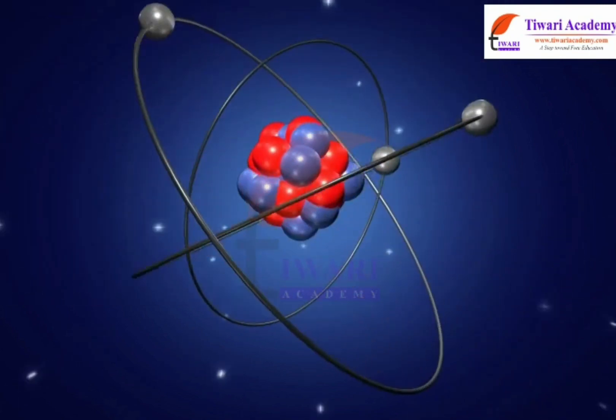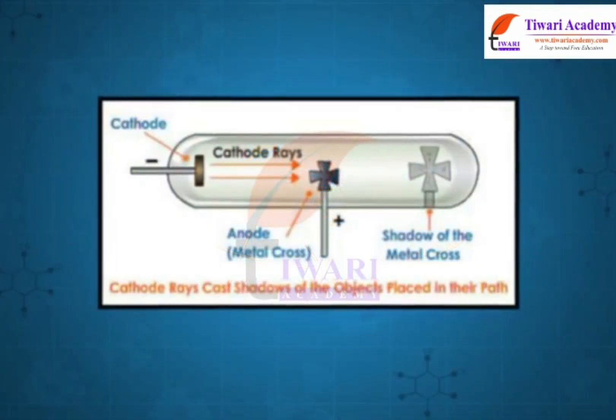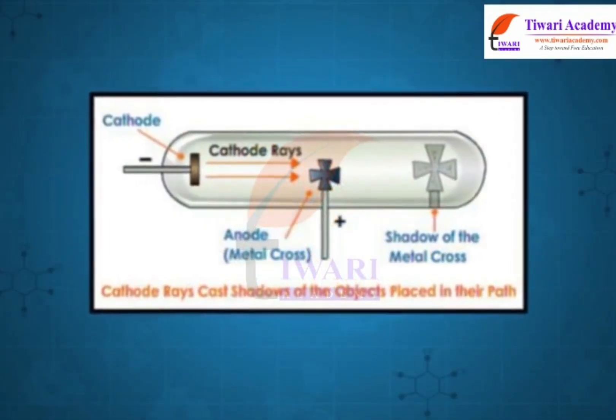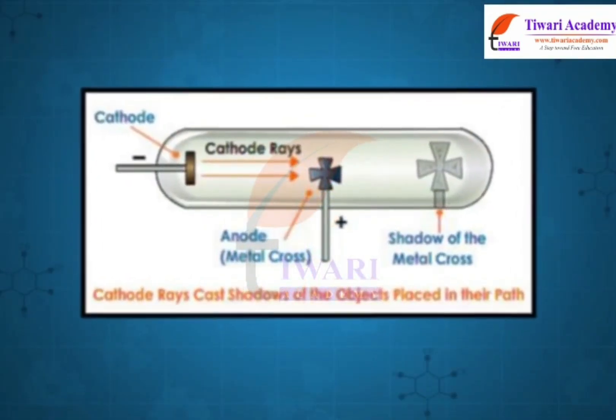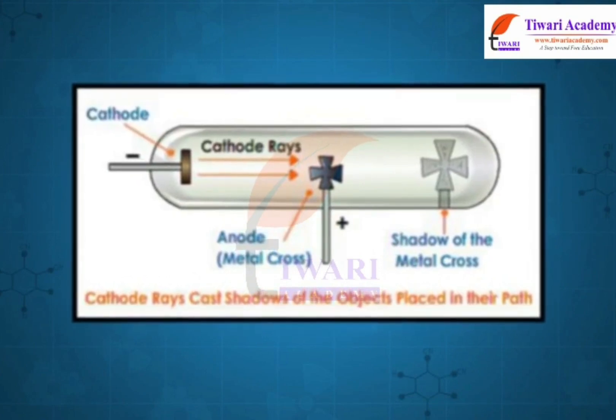The charge to mass ratio of the particles in the anode rays was found to depend upon the nature of the gas in the discharge tube.